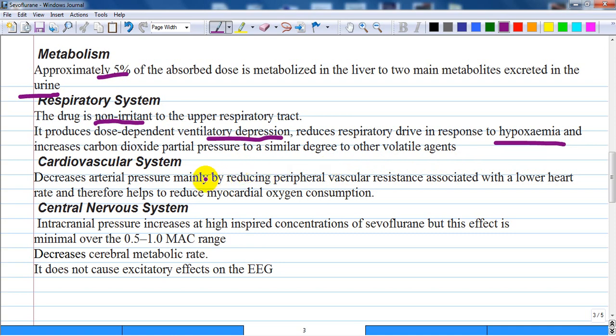On the cardiovascular system, the properties of sevoflurane are similar to those of isoflurane with slightly smaller effect on heart rate and less coronary vasodilation. It decreases arterial pressure mainly by reducing peripheral vascular resistance associated with lower heart rate and therefore reduces myocardial oxygen consumption.